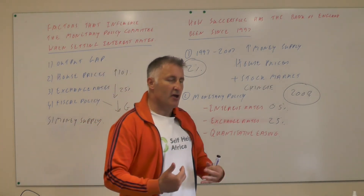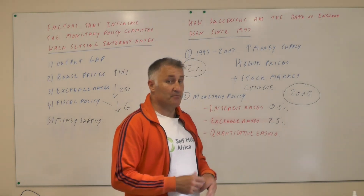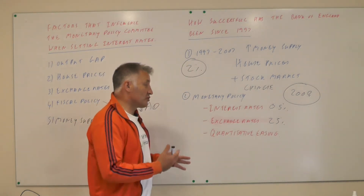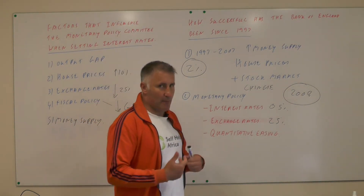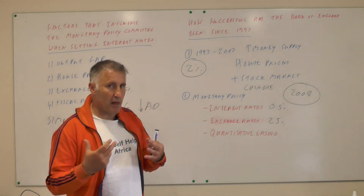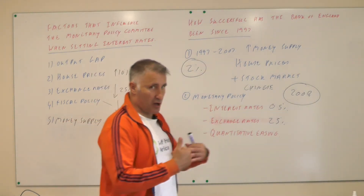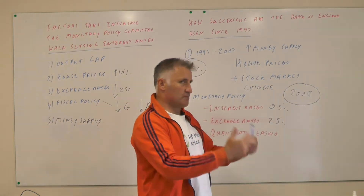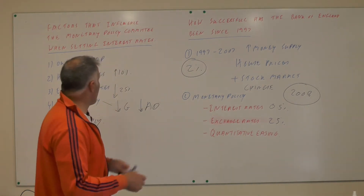One thing they did was print more money — in a sense giving more liquidity to the banking system. Quite weird that the banking system had got us into trouble in the first place, but we bailed it out because we need a banking system. Banks play a very important function in society: we put our money in, we save, and then they lend it out to businesses.